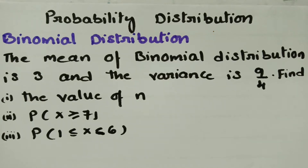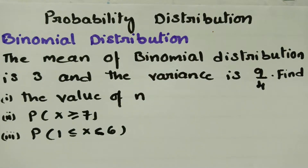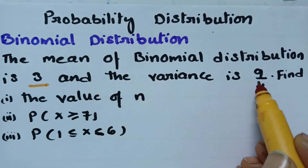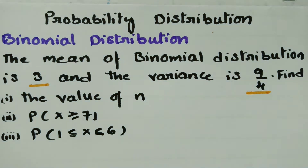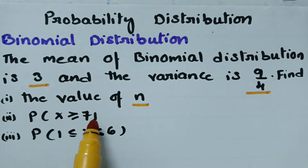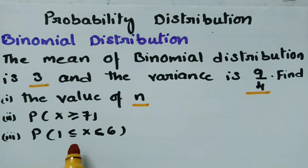Today's video is on binomial distribution. In this video, we have to solve the following: the mean of a binomial distribution is given as 3 and the variance is given as 9 by 4. We have to find the value of n, the probability of x greater than or equal to 7, and the probability of 1 less than or equal to x less than 6.